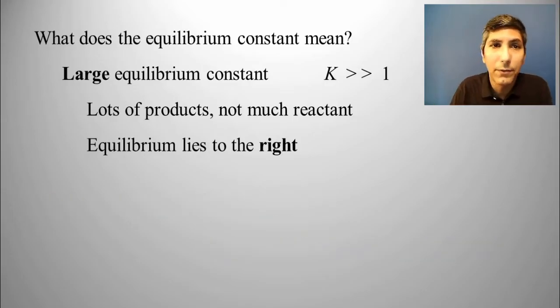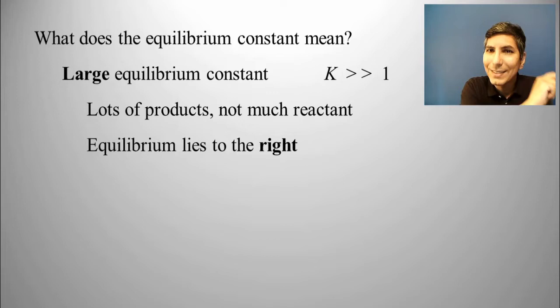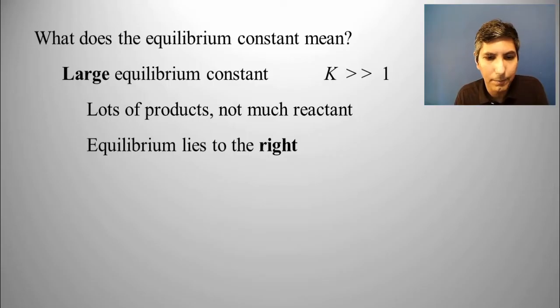That's what it means if you have a very large number like we had in the last video. In chemistry, sometimes we say that equilibrium lies to the right, if that's the case. And why do we say that? Well, when you write out an equation, you always write the products on the right side of the arrow. So that's just kind of a secret code or a little way of saying that equilibrium lies to the right.